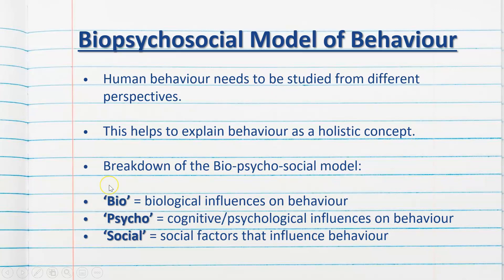The model is broken up into three sections. We have the bio section, which explains the biological influences on behaviour. We have the psycho section, which covers the cognitive and psychological influences on behaviour — cognitive meaning thoughts, processing, and thinking. And we have the social part, which covers the external factors that may influence behaviour. We need to look at all three: the bio, the psycho, and the social factors of any behaviour we are interpreting.